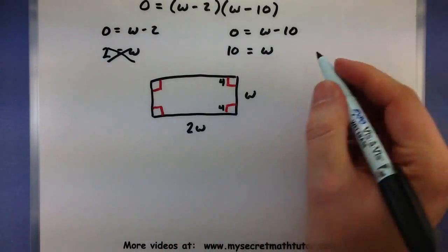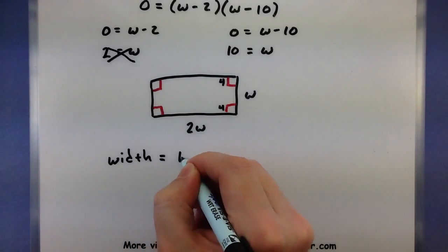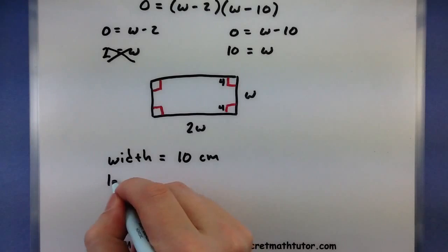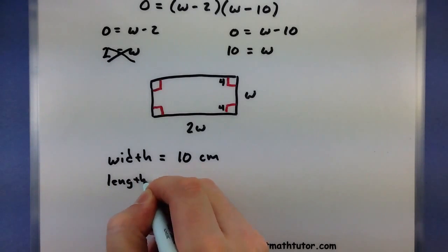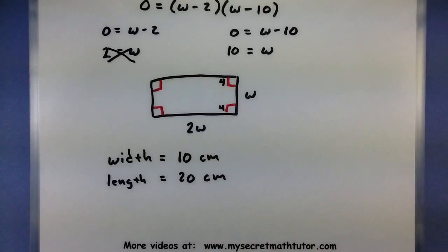So I know that my width is 10 centimeters. Since my length is exactly twice as much, it must be 20 centimeters. Just like that.